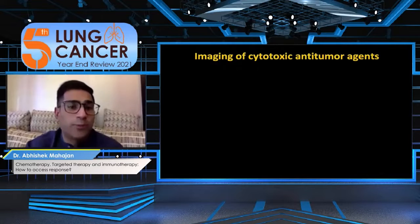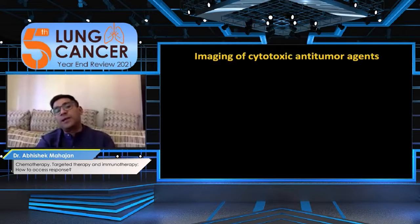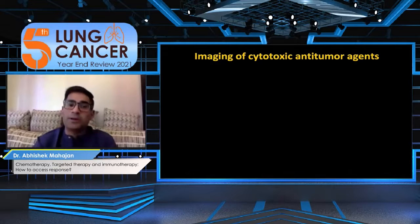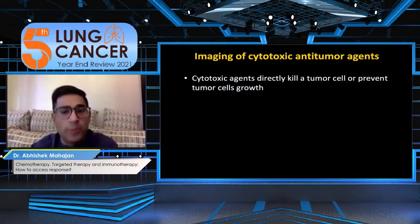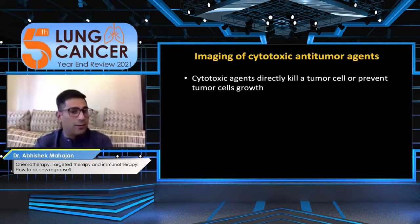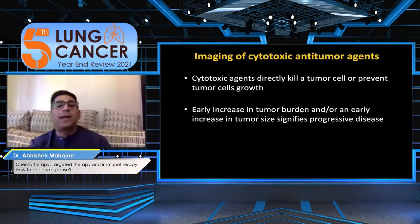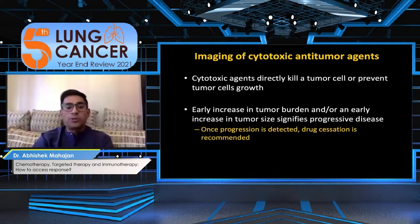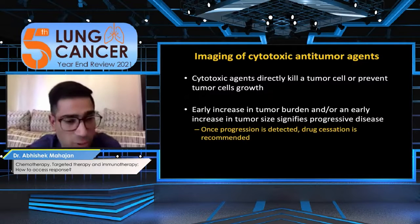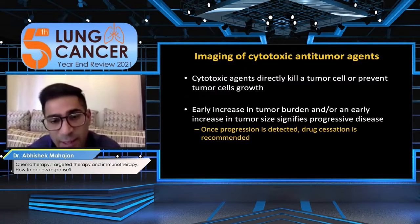Partial response is when you see less than 30% decrease, and 20% increase leads to disease progression. These changes were mostly seen with therapies such as cisplatin or platinum-based therapies. They are either cytotoxic or cytostatic. In cytotoxic therapy, tumor cells undergo necrosis and apoptosis and there can be either increase or decrease in the tumor size. Hence when progression is detected, the drug is stopped and second line therapy is started.